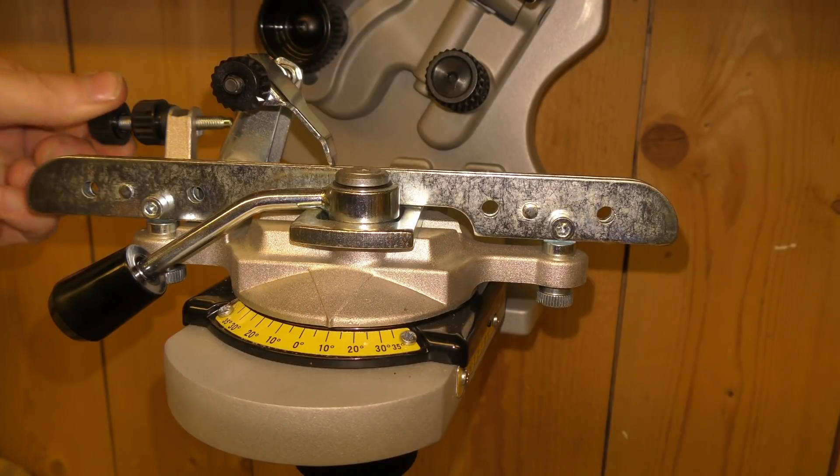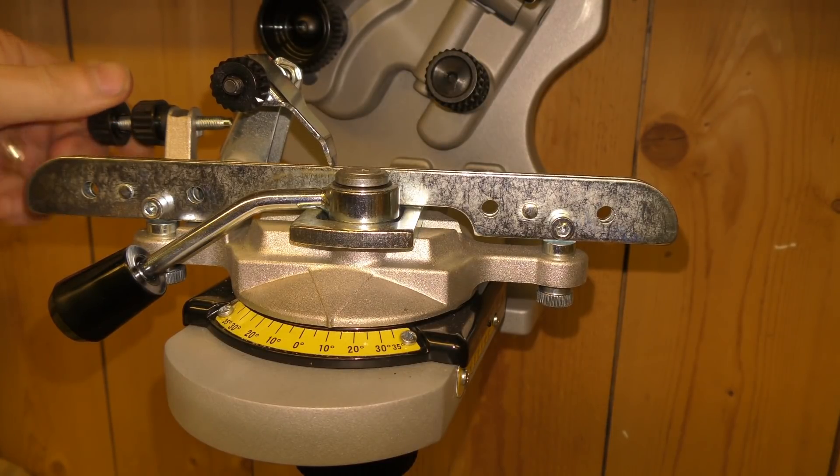With this knob, you adjust the chain back and forward so it will meet the grinder disc at the right place.